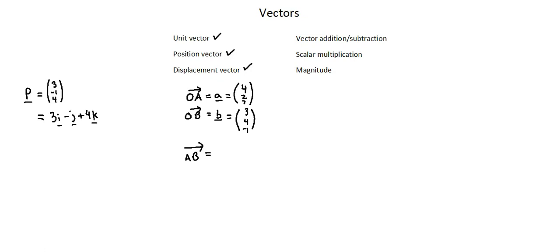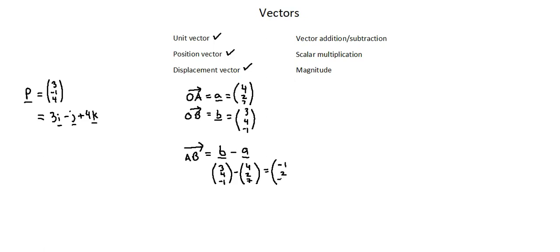Therefore, the resultant vector of AB is going to be a subtraction operation. It's important that we use the correct order of subtraction. For AB, with B as the head, we start with the vector that goes in the direction of the head of the resultant vector, which is vector B, and we subtract the vector going in the direction of the tail of the resultant vector, which is vector A. To complete our calculation, we'll take the components of vector B — 3, 4, and negative 1 — subtracting the components of vector A — 4, 2, and 7 — to arrive at the resultant vector of negative 1, 2, and negative 8.